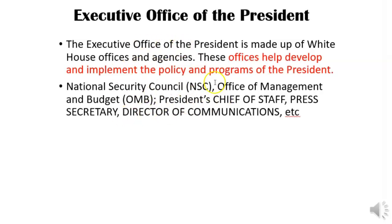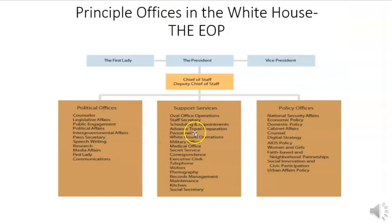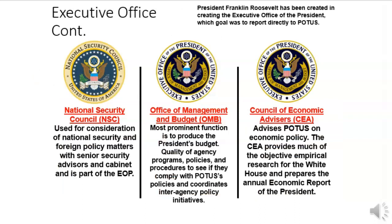Sarah Huckabee Sanders was Trump's second press secretary, and General Kelly was President Trump's second chief of staff. The three big offices under the EOP are the National Security Council, the OMB, and the Council of Economic Advisors.